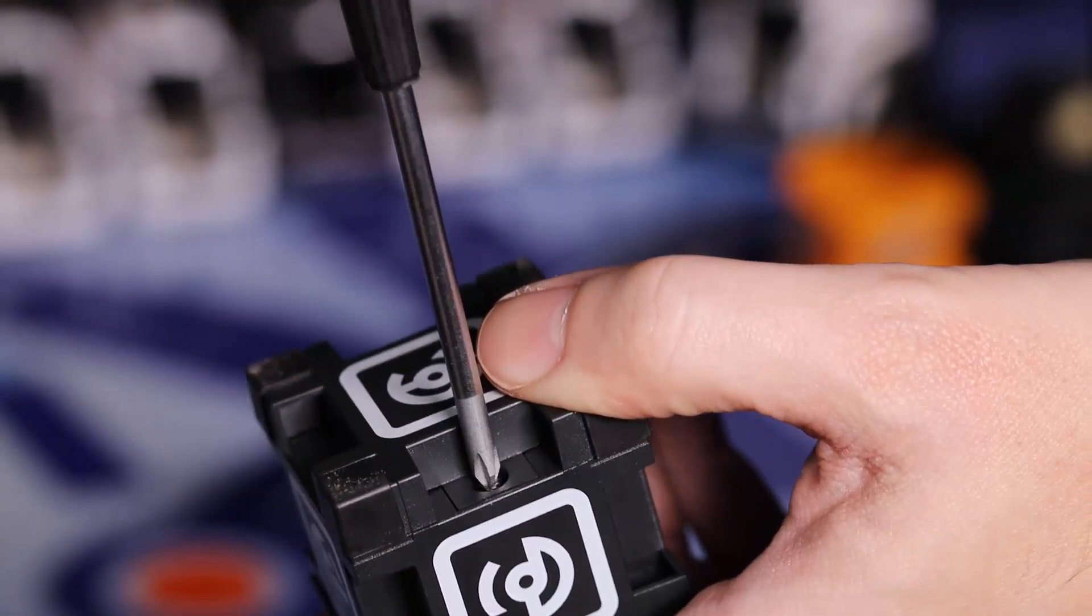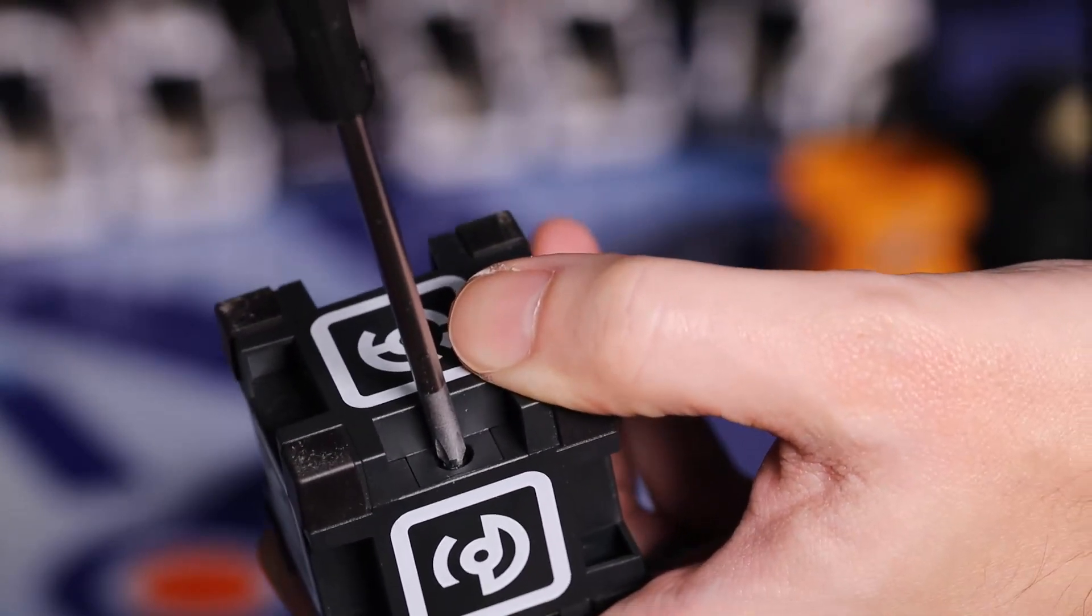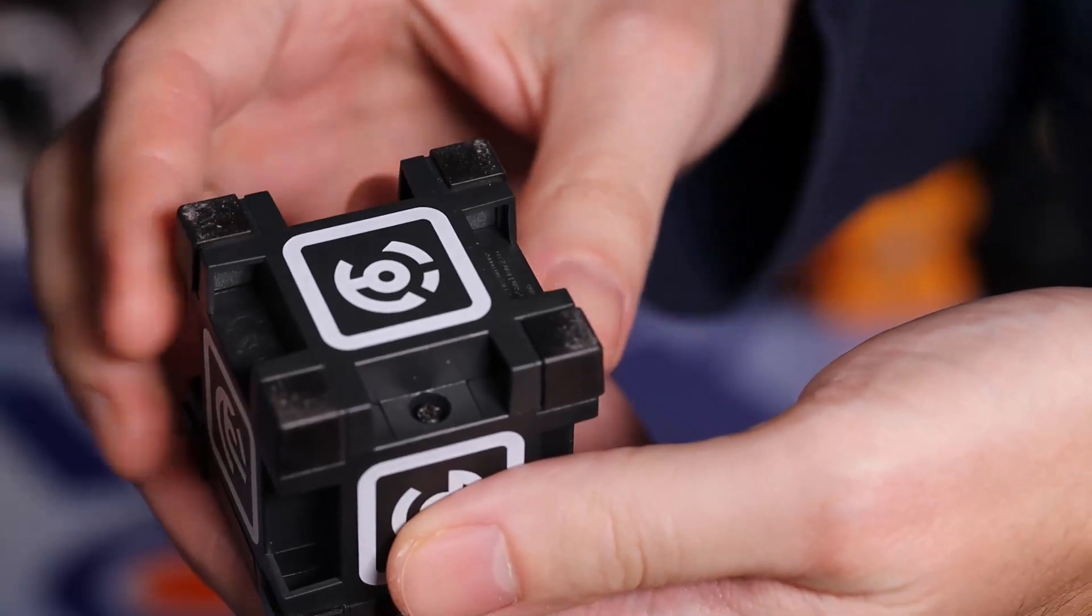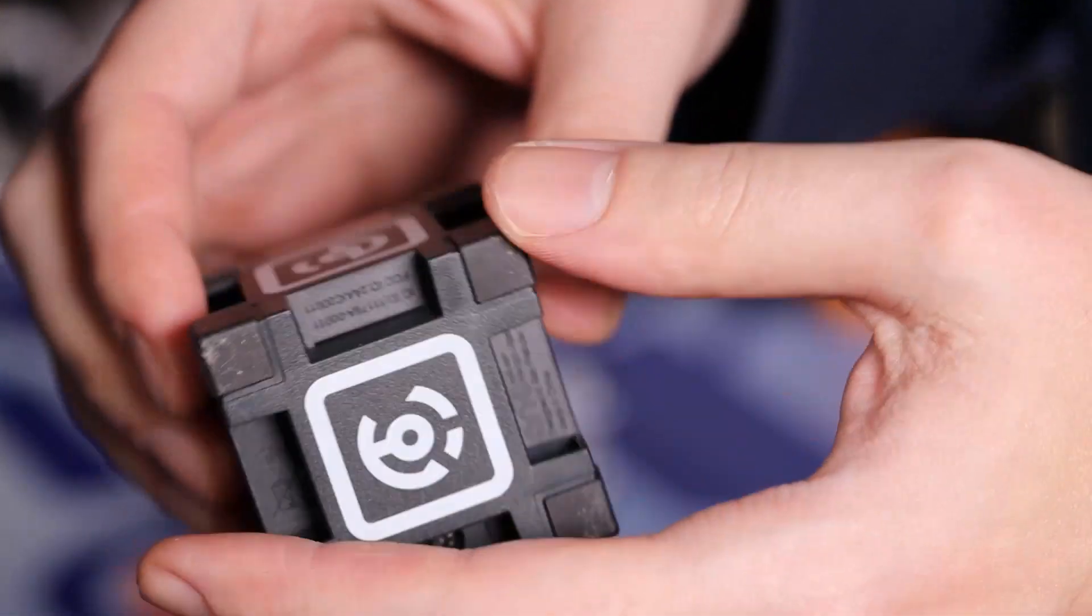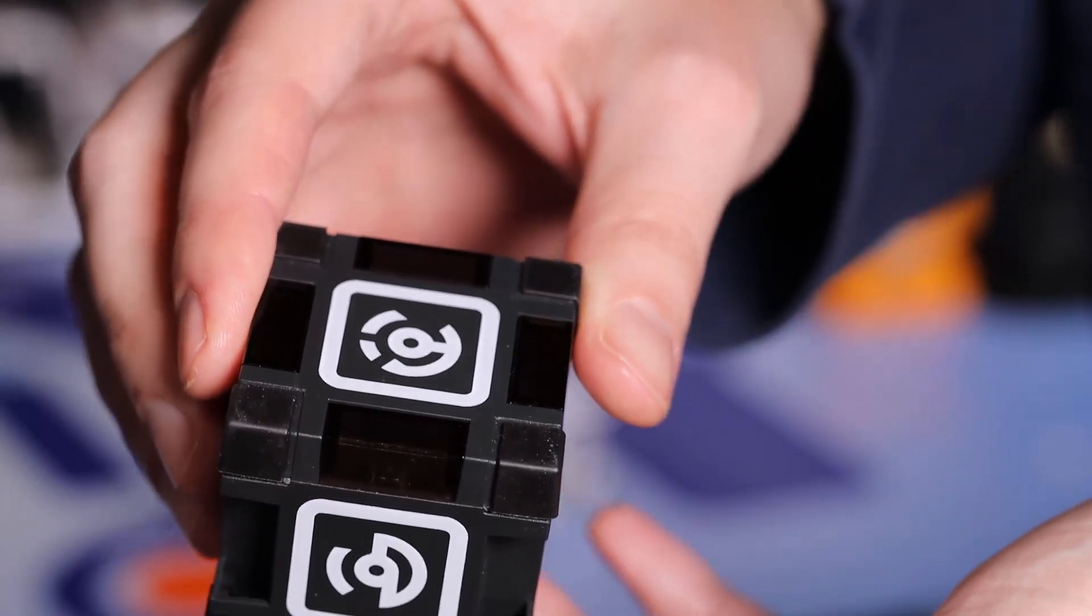And I'm going to put the screw back in here. Righty-tighty. Don't tighten it too much. You don't want to torque that down way too much because there's plastic parts in there. And there we go. We've got a good vector cube.